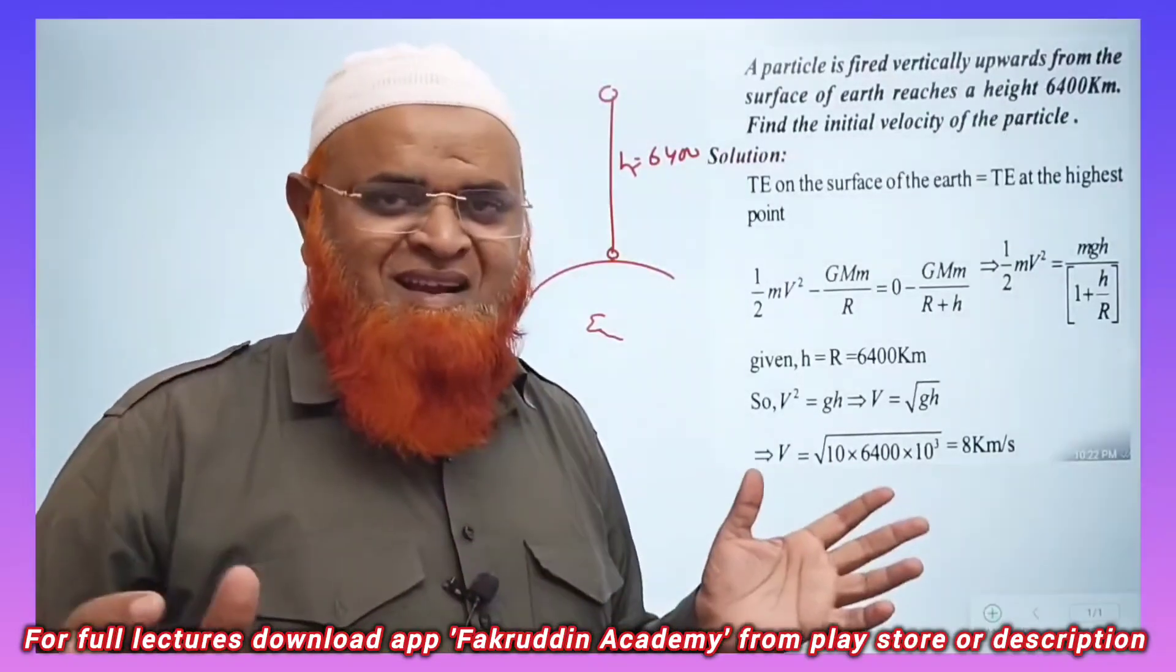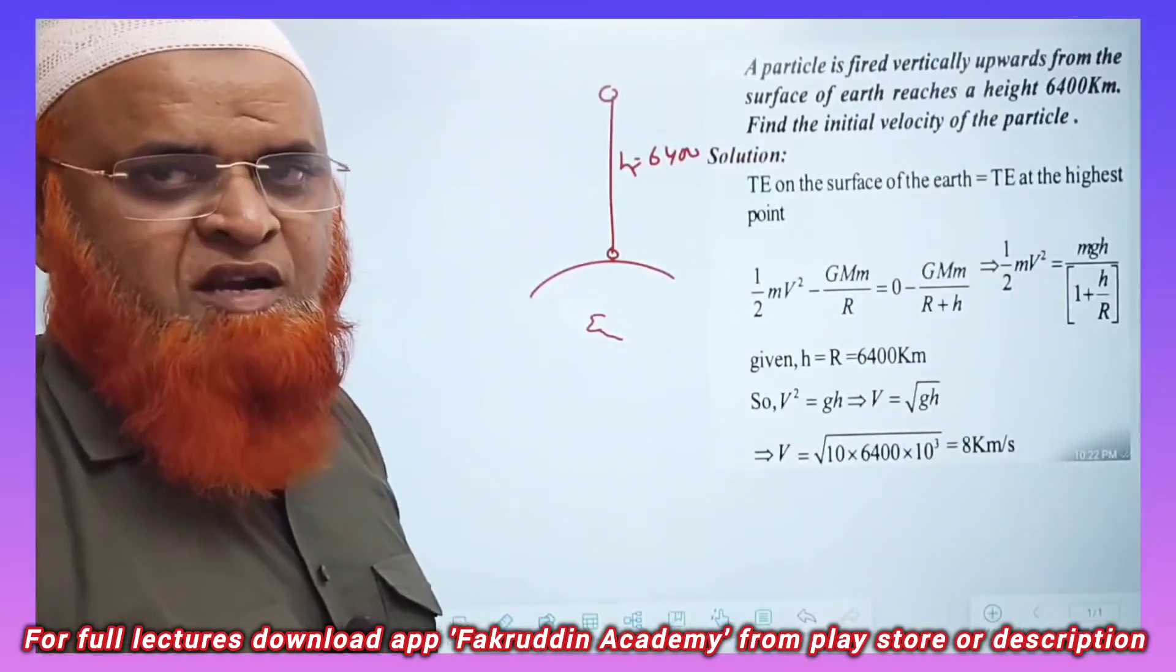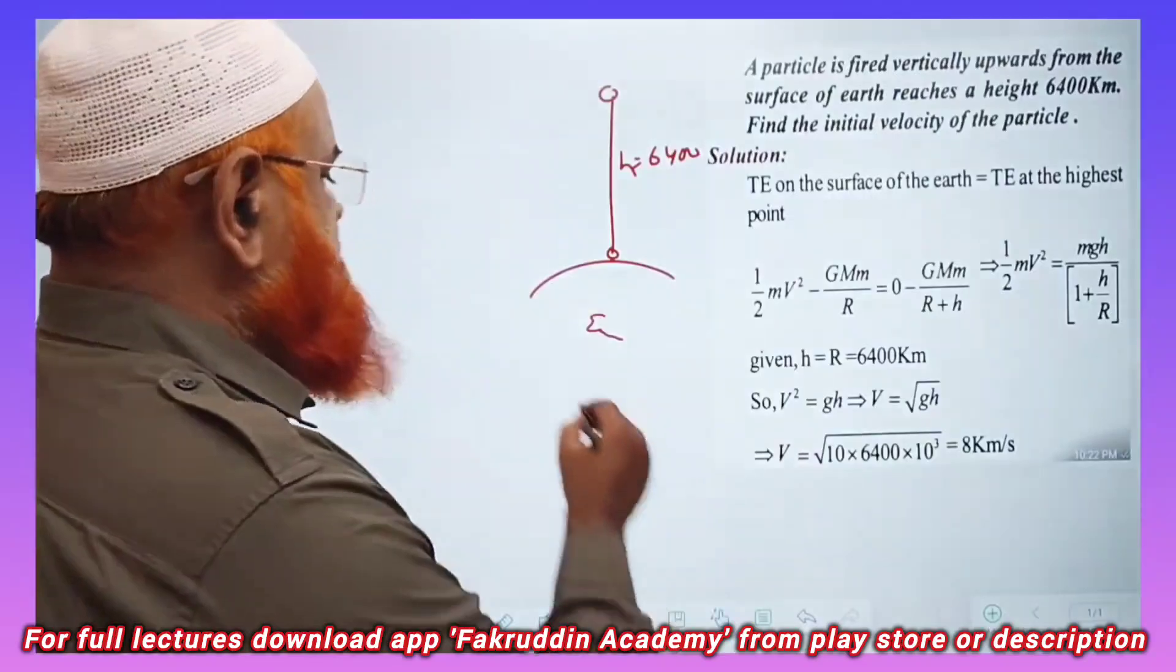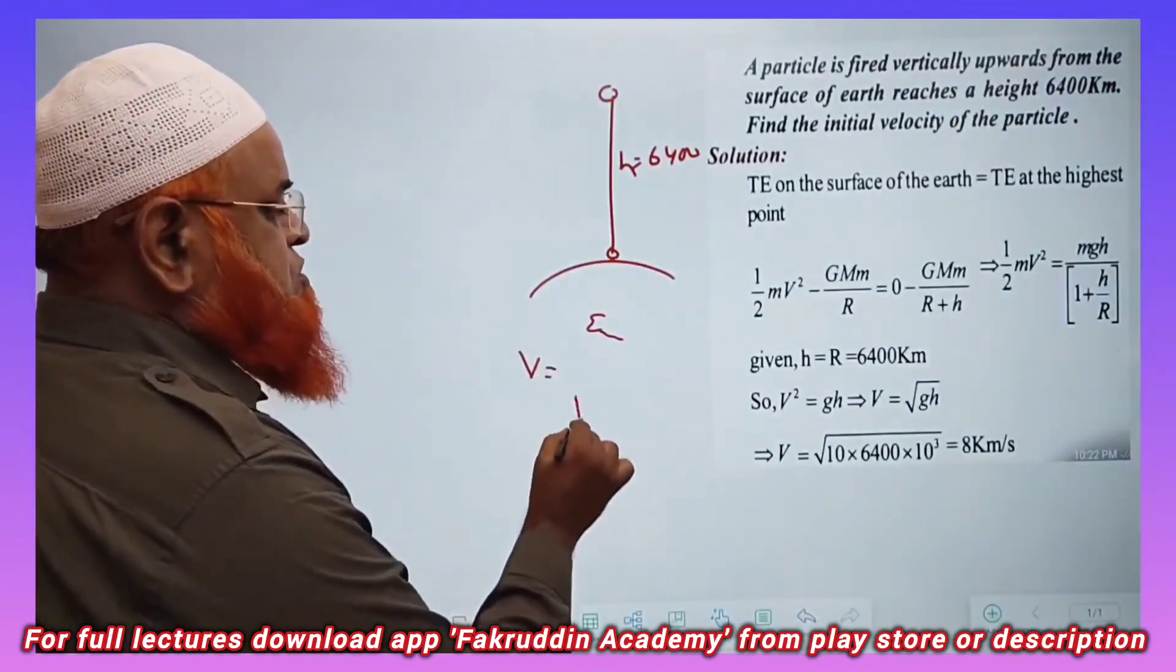But I'll teach you one small shortcut here. Instead of doing all these things you can just write one formula: V is equal to square root of 2gh divided by 1 plus h by r. That's it.